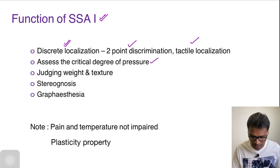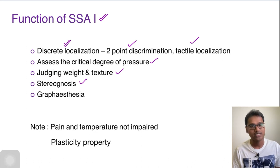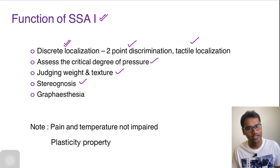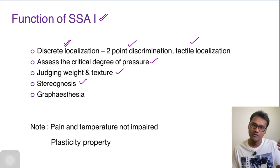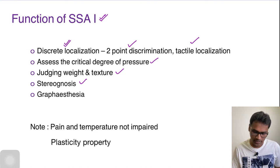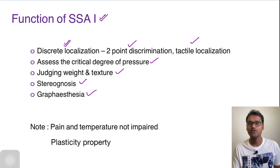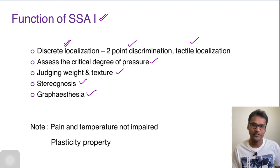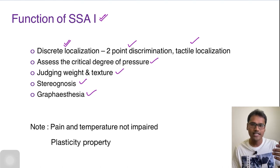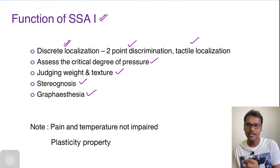Judging weight is also done by this area. We also have stereognosis — the ability to identify a known object with closed eyes, which we discussed in our dorsal column lecture. Then graphesthesia: suppose your friend is writing a letter on your hand, you will be able to identify it — that is called graphesthesia. All these are the properties of somatosensory area 1.